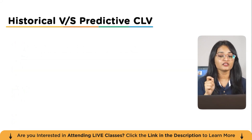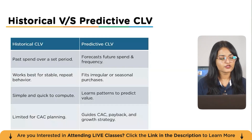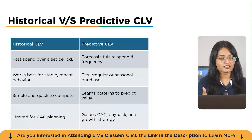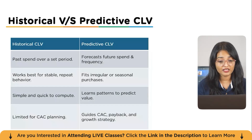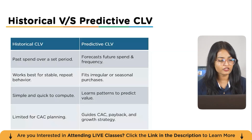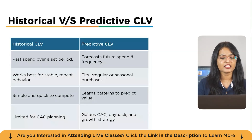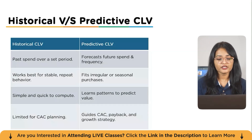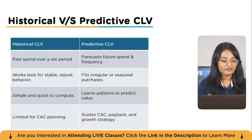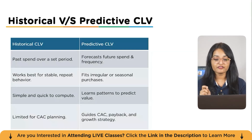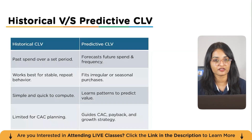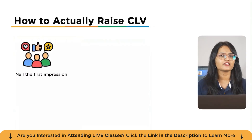There are two types of CLV: historical and predictive. Historical CLV looks at past spend over a set period — it's simple, quick to compute, and works best for stable, repeat behavior, but is limited for planning future acquisition. Predictive CLV forecasts future spend and frequency by learning patterns — it fits irregular or seasonal purchases and guides customer acquisition cost, payback periods, and growth strategy. Understanding which model to use depends on your business type.